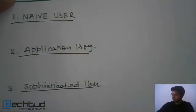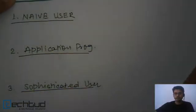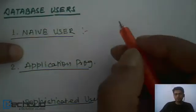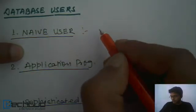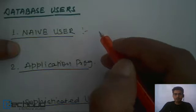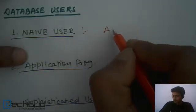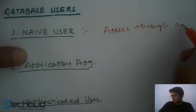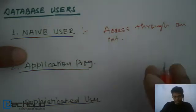The first one we have is naive user. The naive user has the only permission to see. This kind of user generally does the access to database through an interface. Access through an interface.